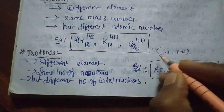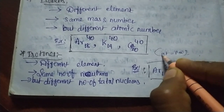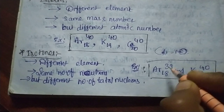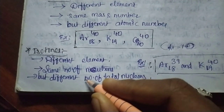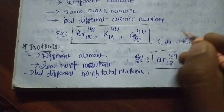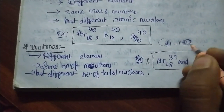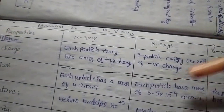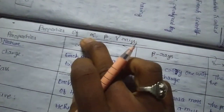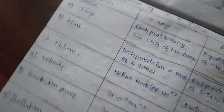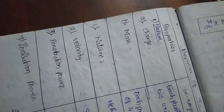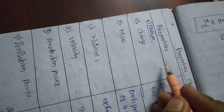Isotones are different elements in which the number of neutrons is equal in both, meaning same neutron count but different total number of nucleons.